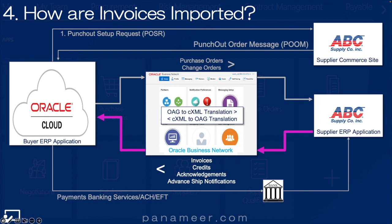The invoice import runs on that staging table data and creates an invoice within the invoicing tables. I didn't say 'valid' because you do still need to run the invoice validation — it's just saying that it can build an invoice. The validation will tell you whether the business rules are correct, so there's a slightly different distinction there.